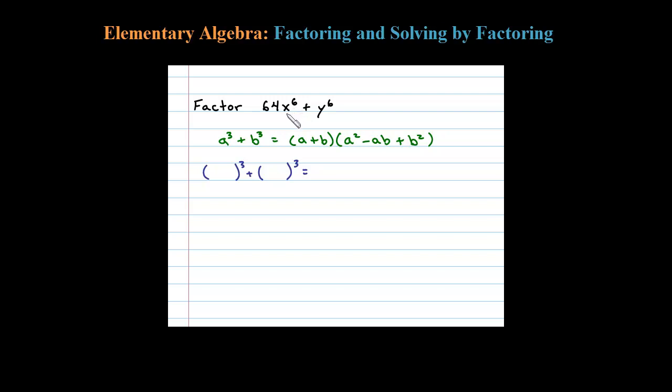After a little thought, you could see that would be x squared. So 4x squared cubed is 64x to the sixth. Then look at y to the sixth.